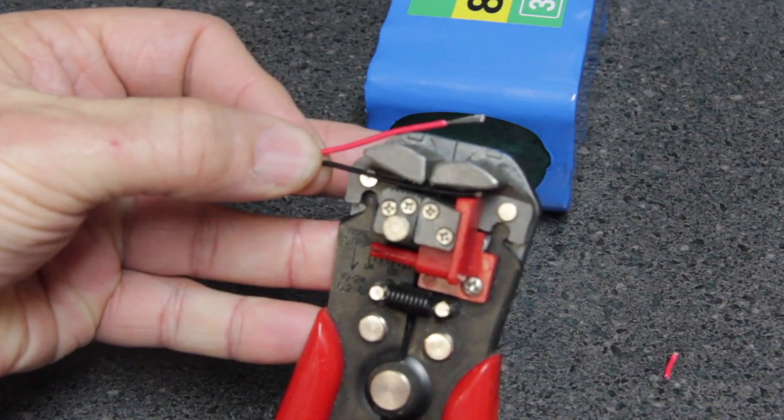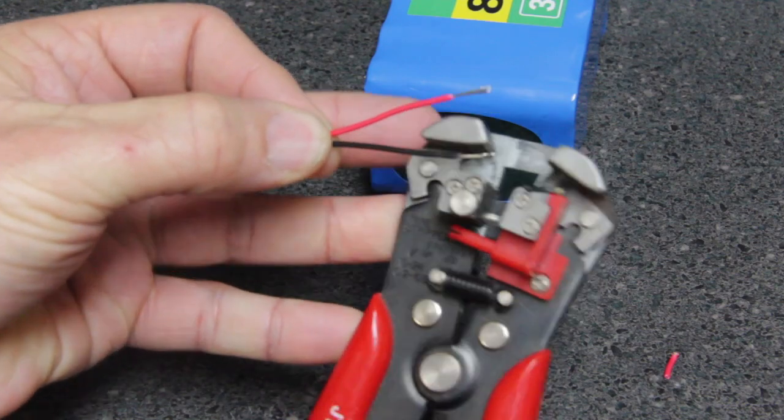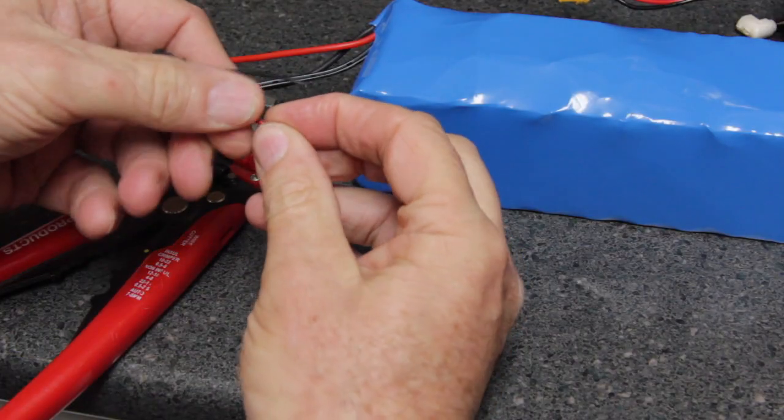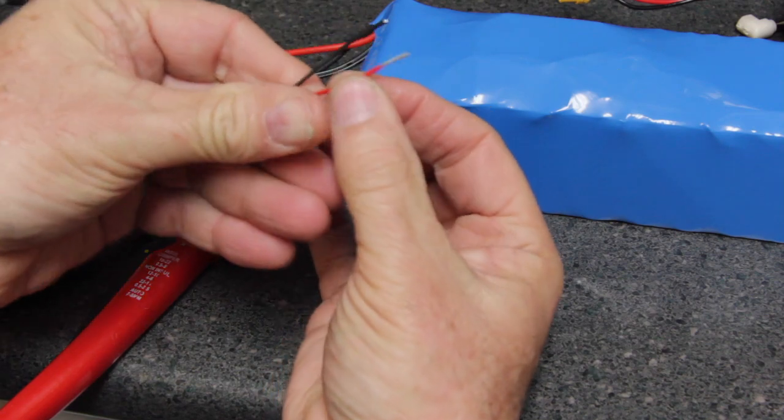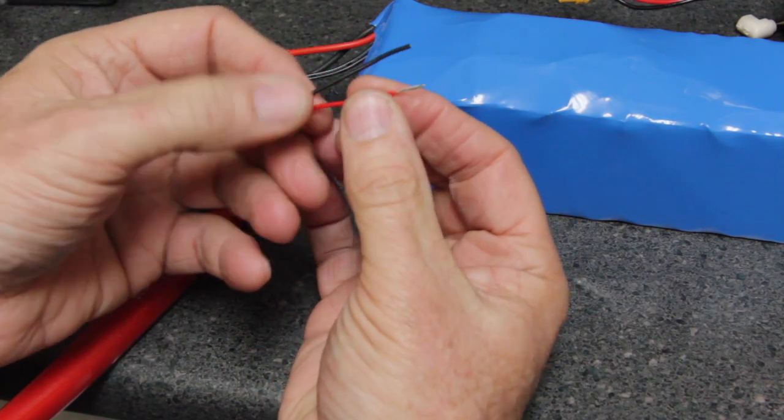Again, we want a half inch to three quarters of an inch, and I always like to twist my wires. These wires are stranded—there's a bunch of little strands underneath the insulation.